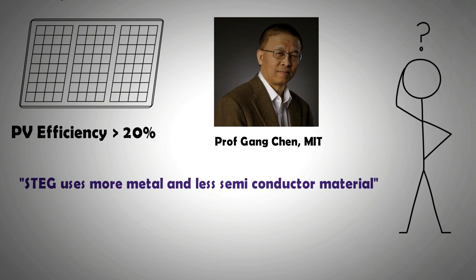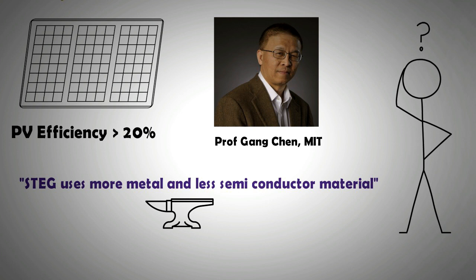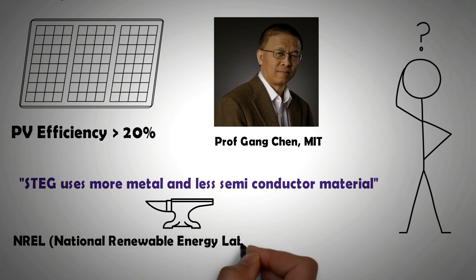He further adds that in a PV system, semiconductor materials make up most of the panels and metal is used sparsely as charge collector. This means there is huge potential for reducing the cost of electricity generation. This idea is echoed by NREL, the National Renewable Energy Laboratory, which suggests that the cost of electricity generation with STEG can be as low as half a dollar per watt.